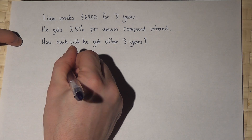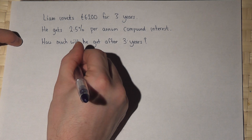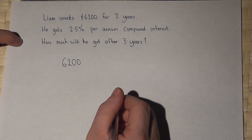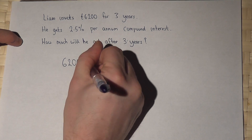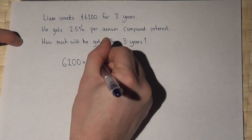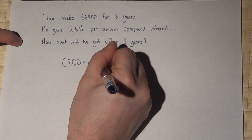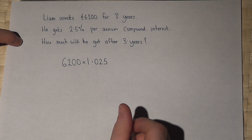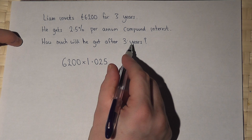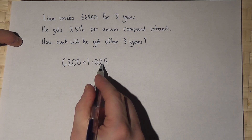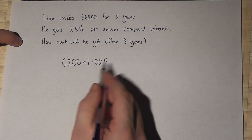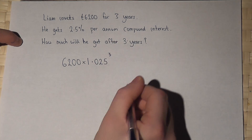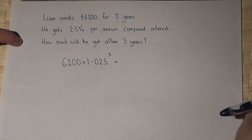Now to work this out, there's a trick on the calculator. To increase by 2.5%, we can times by 1.025. However, because it's over three years, we must times by 1.025 three times. So the shorthand is to raise this to the power of three.